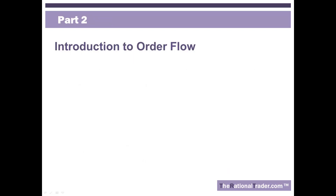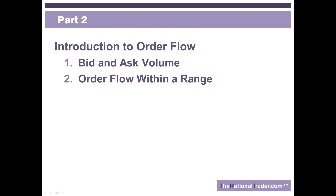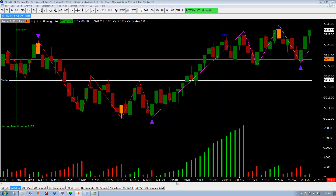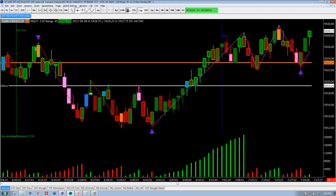This is part two of the video series, Trading the Markets Using Visual Order Flow. We're going to cover an introduction to order flow. There are two specific concepts today: bid and ask volume — answering what order flow is — and how order flow behaves within a range of prices. At the end of part one we covered wave volume, and we're building towards the full chart I use to read the market.